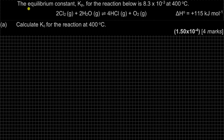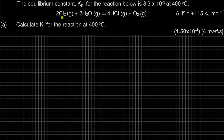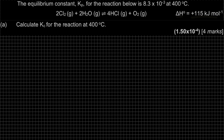Question 5. The equilibrium constant Kp for the reaction below is 8.3 × 10⁻³ at 400°C. The reaction is: 2Cl₂(g) + 2H₂O(g) → 4HCl(g) + O₂(g), given that ΔH is positive 115 kJ/mol.